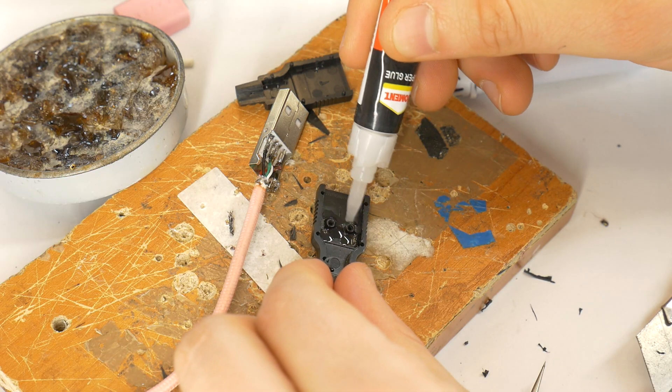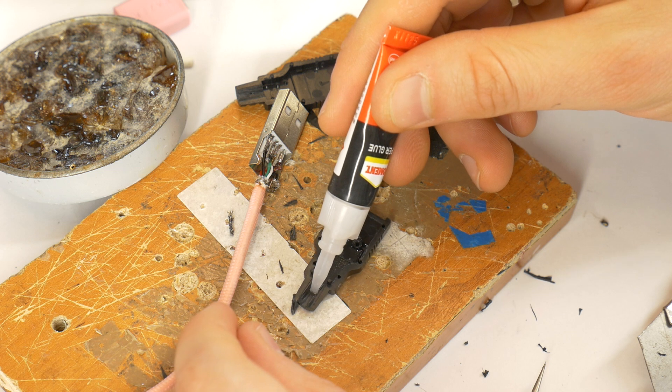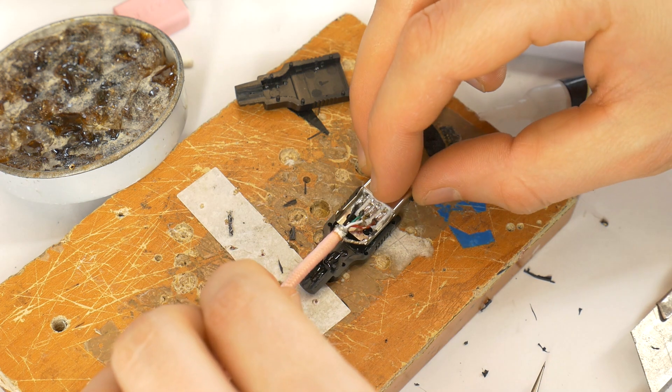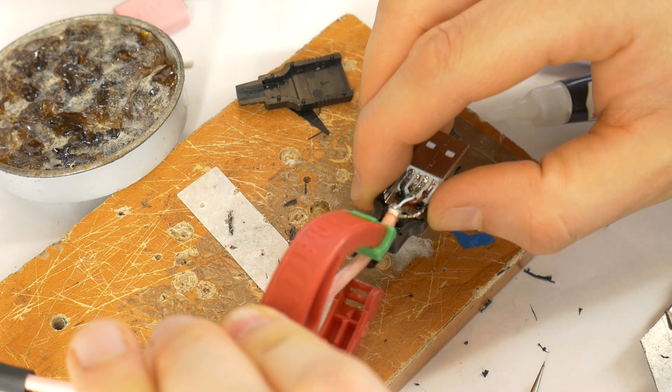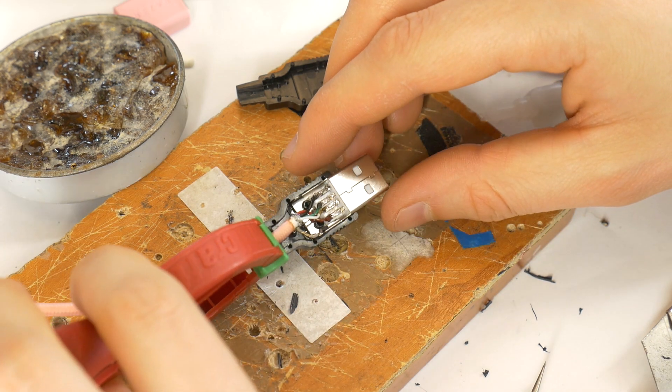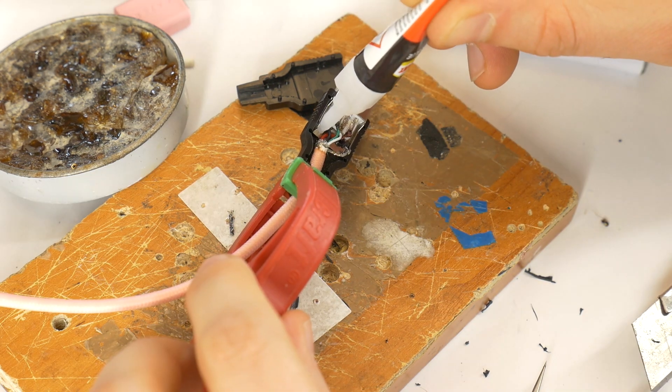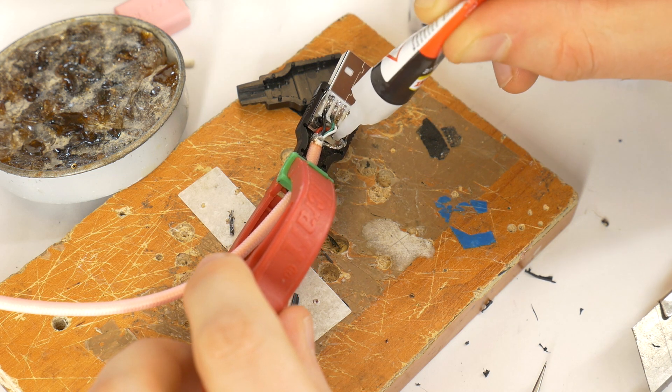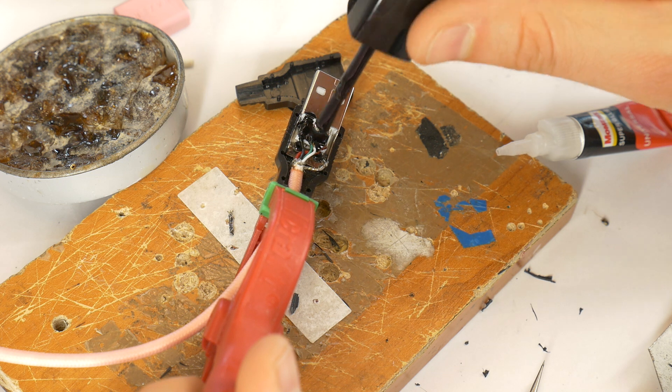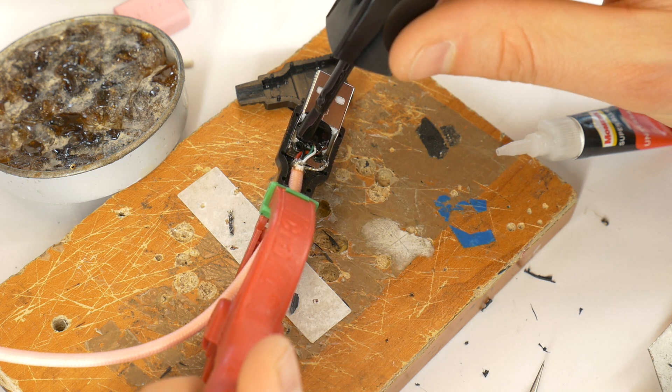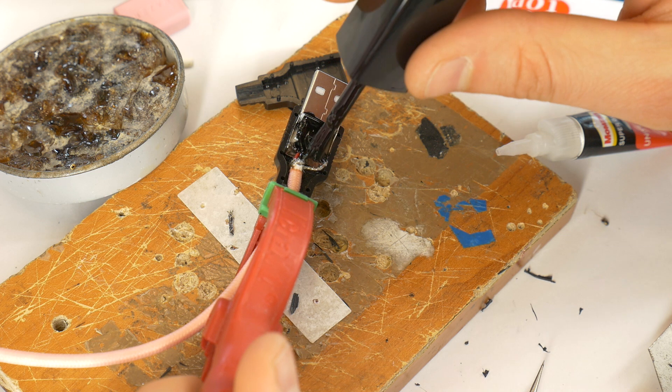Apply super glue where the USB plug metal part and the cable attach. Insert the metal part and cable into the plug housing and use a clamp to hold them in place. Apply more super glue to secure the metal part. Then use your grandfather's nail polish to coat all the contacts. This helps prevent short circuits in the future.